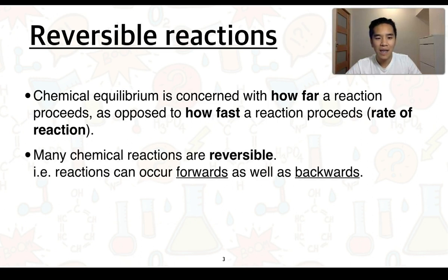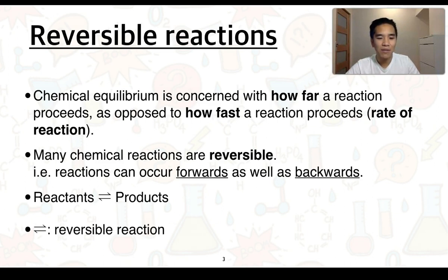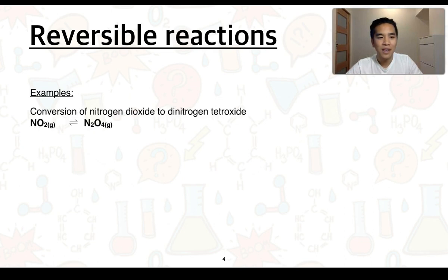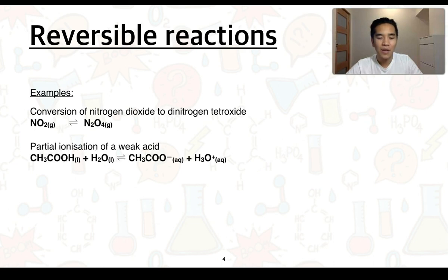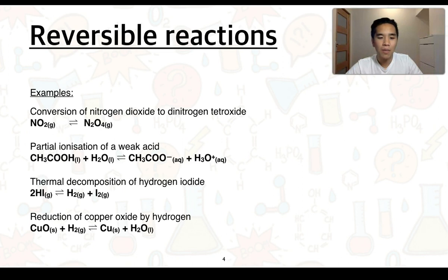In terms of reversible reactions, these are types of chemical reactions that can occur essentially forwards as well as backwards — reactants can convert into products, but likewise products can convert into reactants. We use a double arrow to indicate a reversible reaction. Some examples include the conversion of nitrogen dioxide to dinitrogen tetroxide, the partial ionization of a weak acid, thermal decomposition of hydrogen iodide, and reduction of copper oxide by hydrogen.